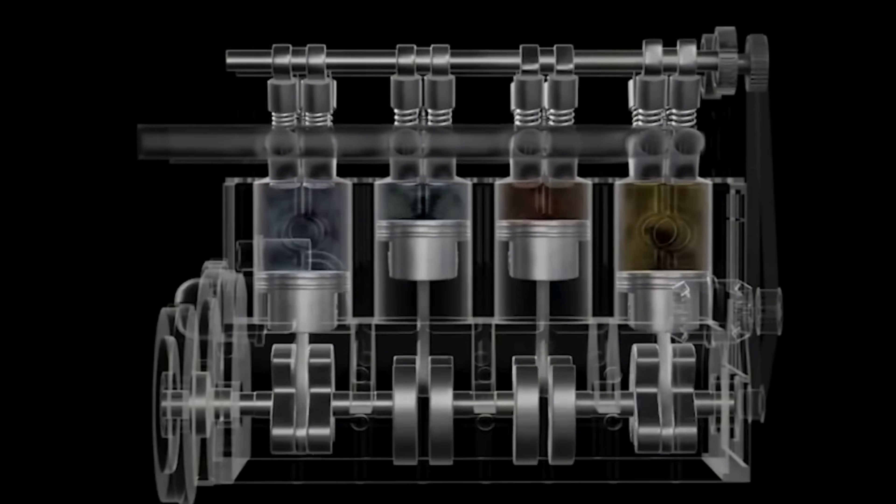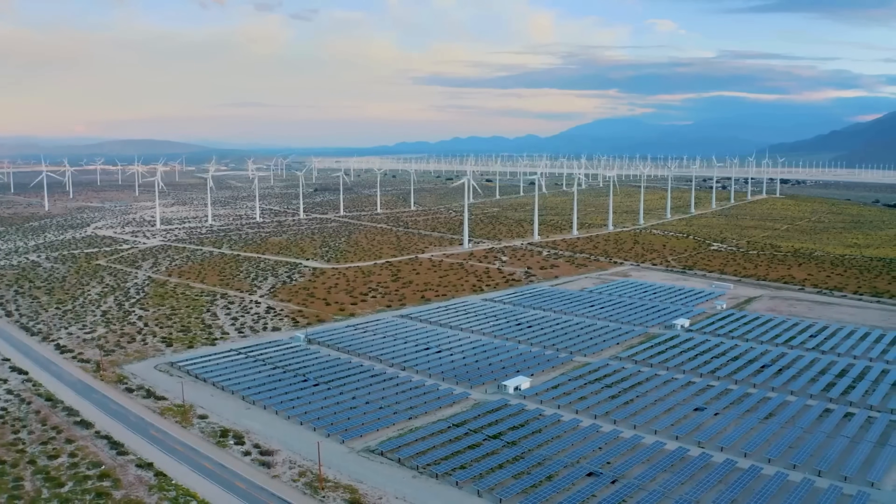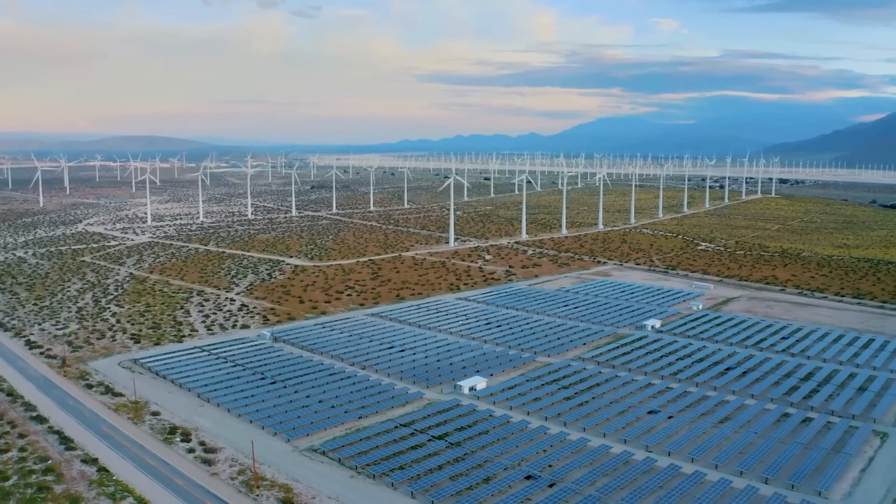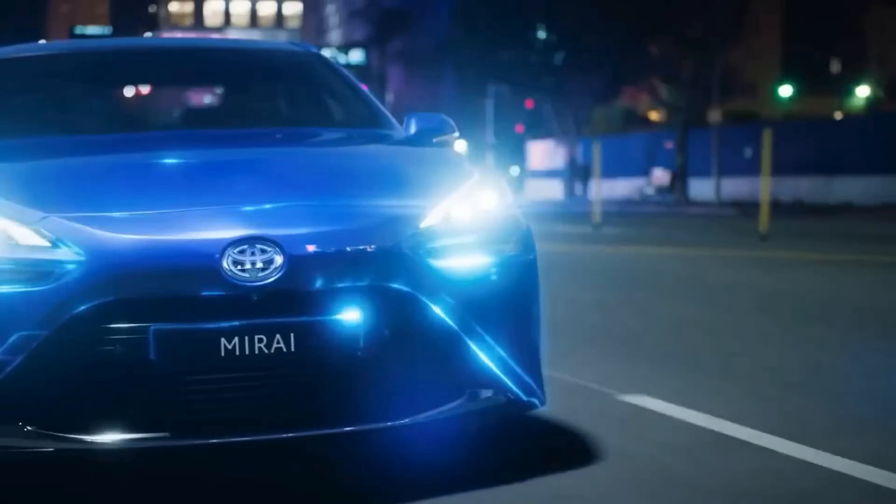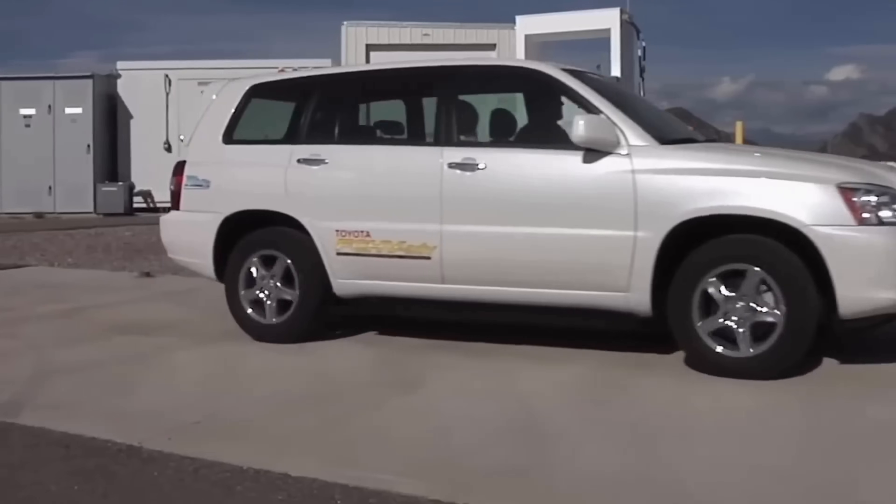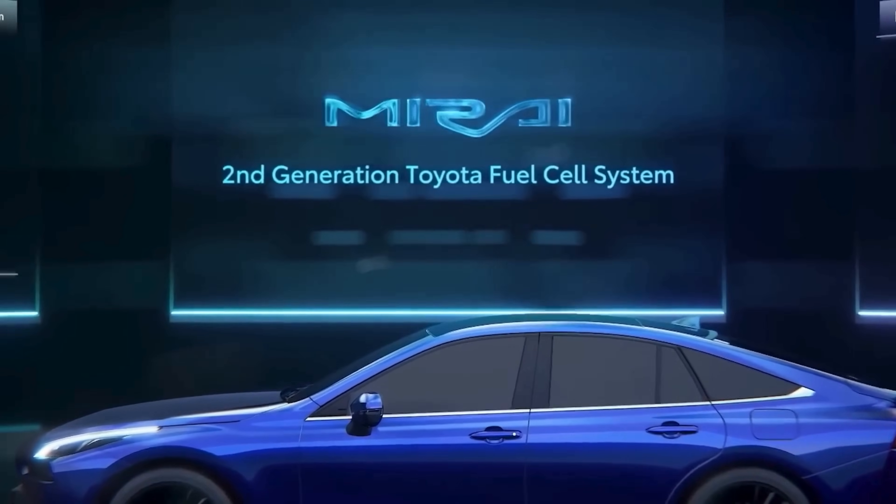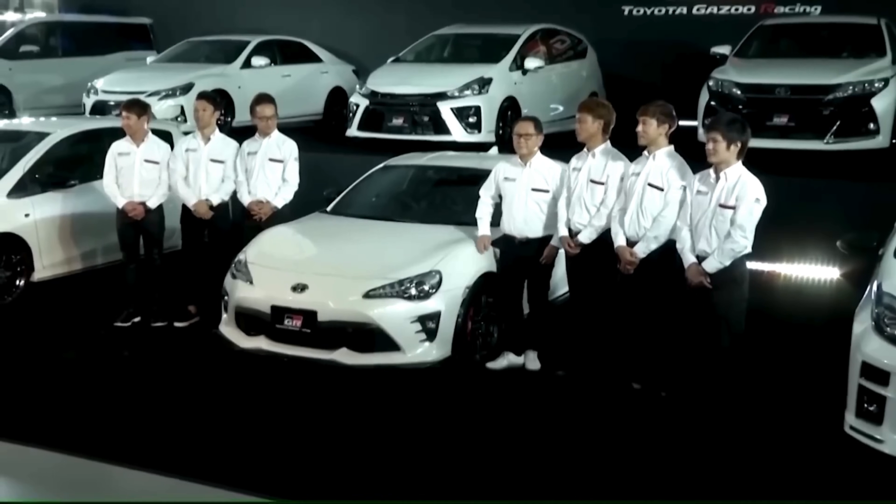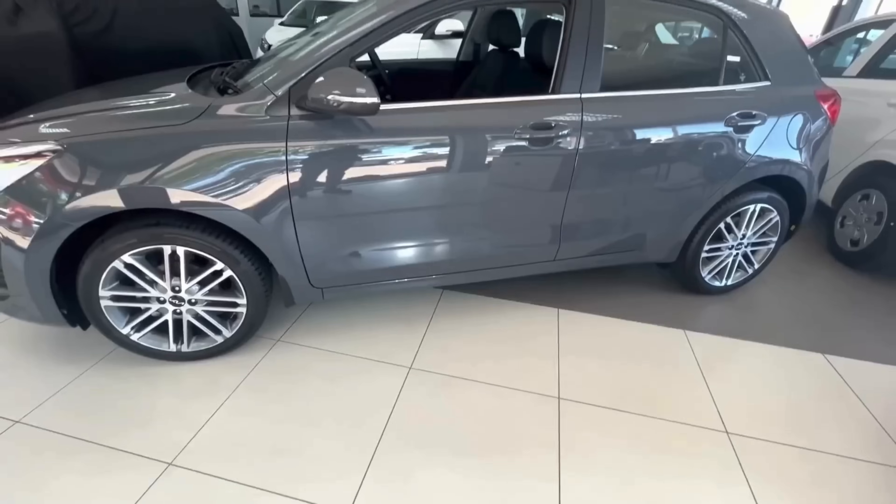However, with a modest budget in the past, they could not reach the goal they wanted to achieve. But Toyota did not give up. It is known that their recent idea has received decent investment. Thanks to that, the Japanese automaker is really making long strides in implementing water-powered engine technology, with the potential to create a new revolution for the automotive world. So, what is special about Toyota's water-powered engine and how does it operate?